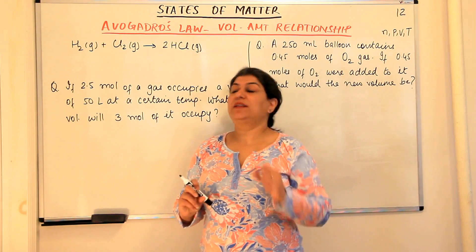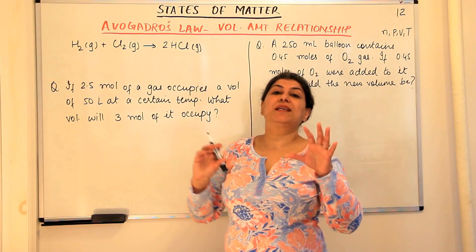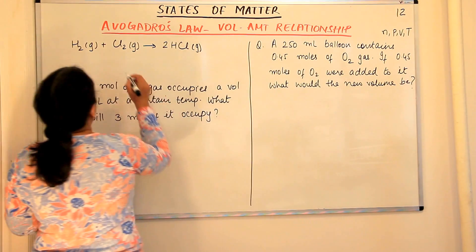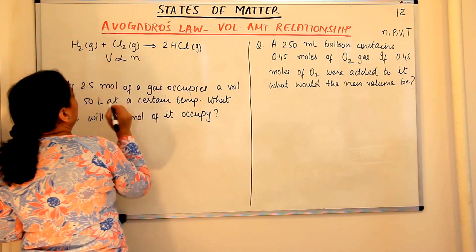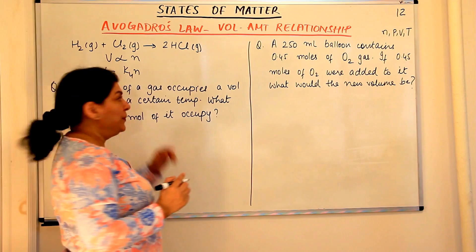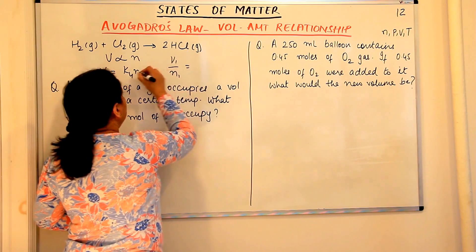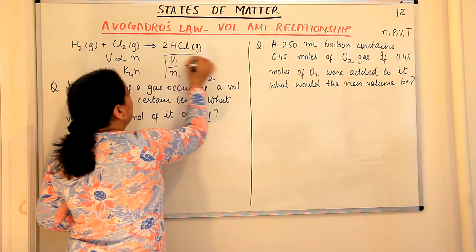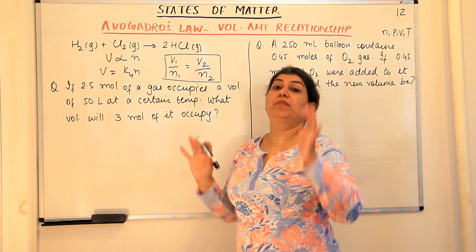There is another thing to keep in mind when solving numerical problems based on Avogadro's law: what is the mathematical relationship we use? Just as in Charles' law and Boyle's law, in Avogadro's law volume is directly proportional to the number of moles, so V = K₄N. The relationship we use is V₁/N₁ = V₂/N₂, since V/N is constant. Here N stands for the number of moles.